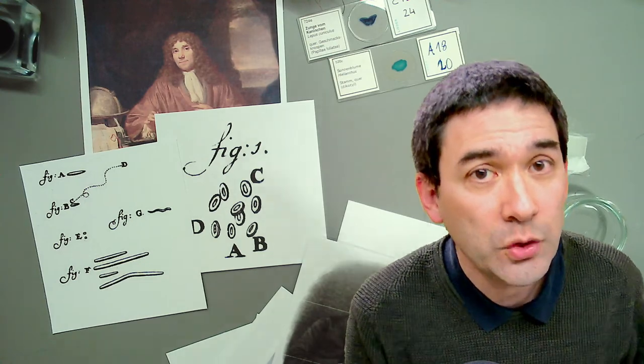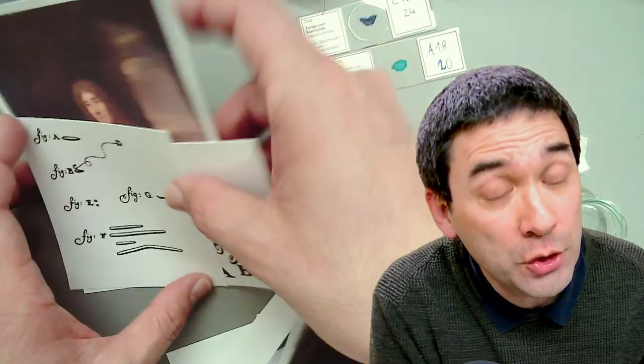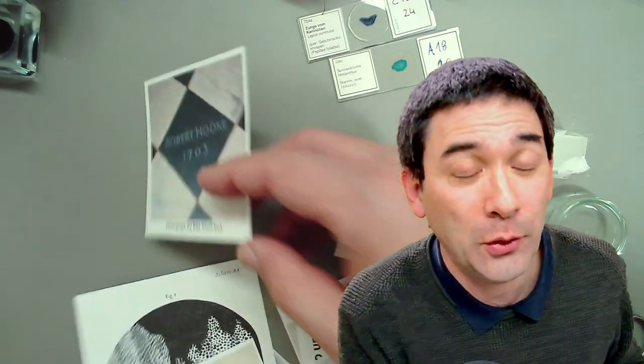Robert Hooke is the person who actually came up with the name 'cell.' Unfortunately no verified portrait of him exists — the pictures often attributed to him are misattributed. His drawings are beautifully detailed — his famous drawing of cork almost looks photorealistic. He published his findings in 'Micrographia,' which you can download for free from Project Gutenberg. It's written in English, is quite large, and very readable.